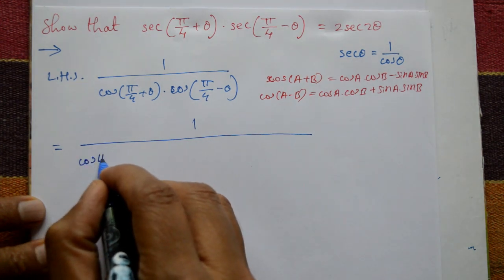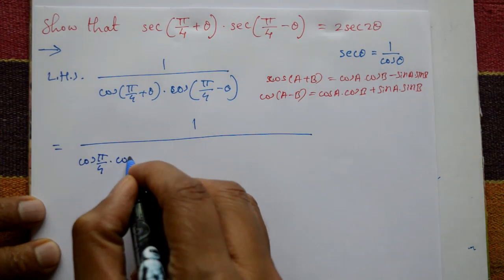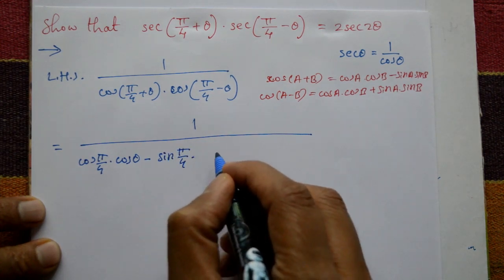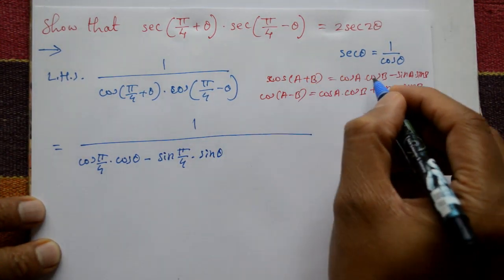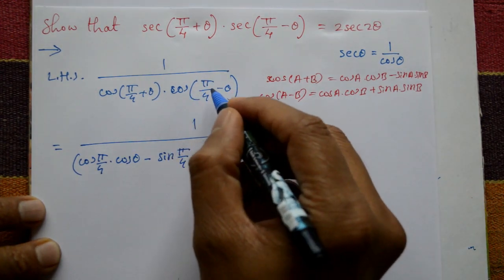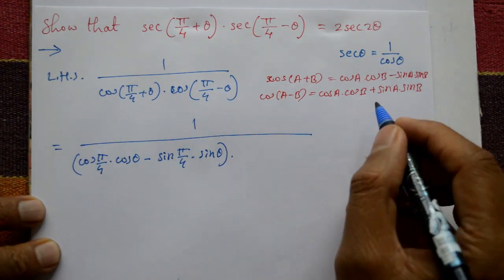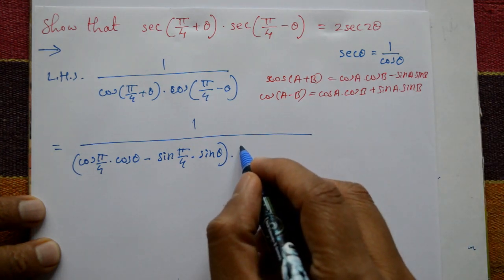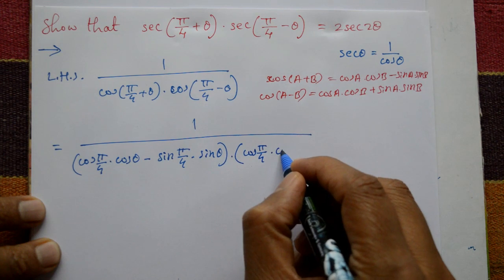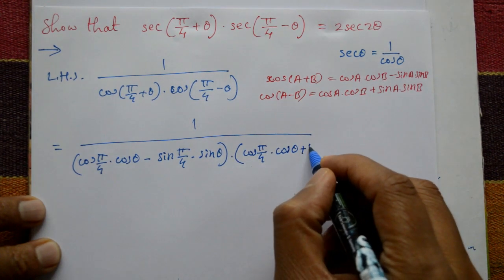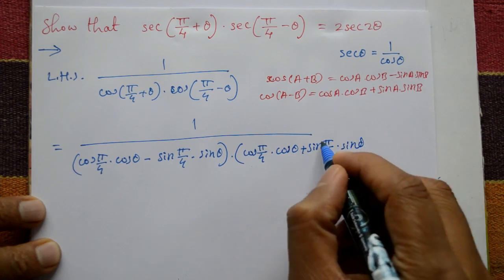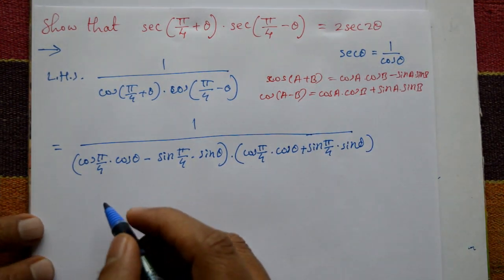The first bracket: cos(π/4)·cos θ − sin(π/4)·sin θ, using the first formula. The second bracket: cos(π/4)·cos θ + sin(π/4)·sin θ, using the second compound angle formula.